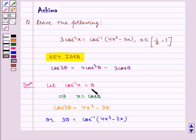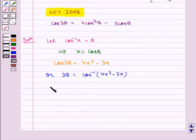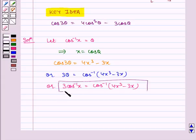Here we have assumed theta is equal to cos inverse x. So substituting theta is equal to cos inverse x, we get 3 cos inverse x is equal to cos inverse of 4x cube minus 3x. And this is our required result.